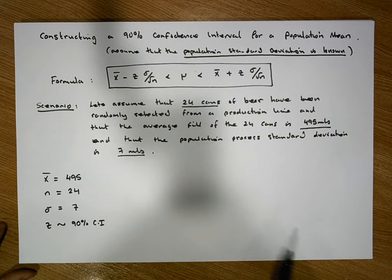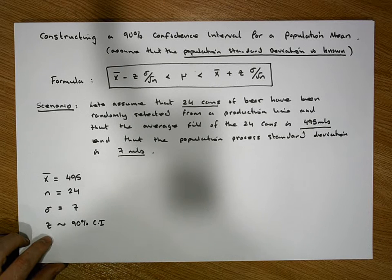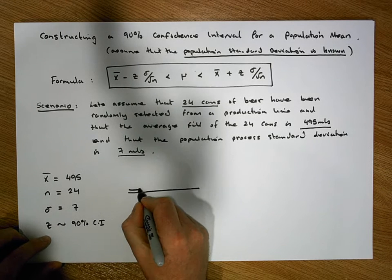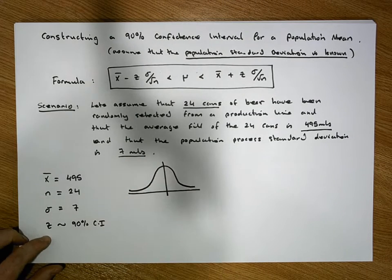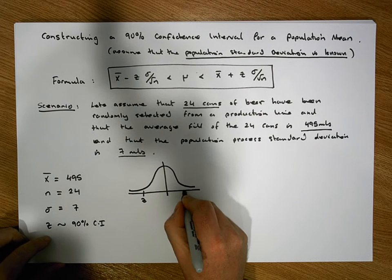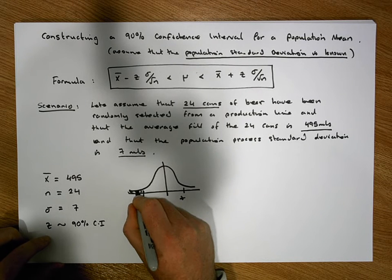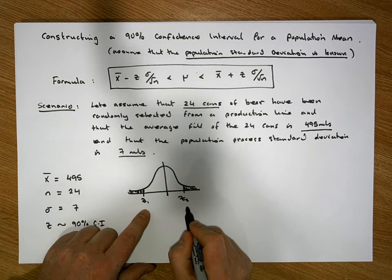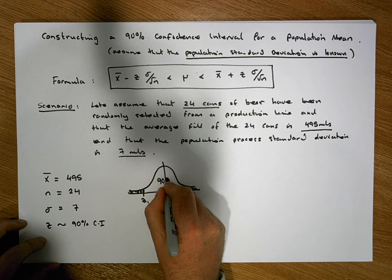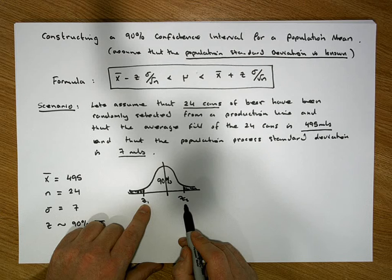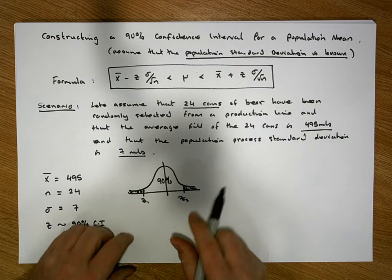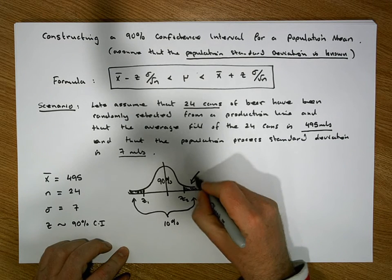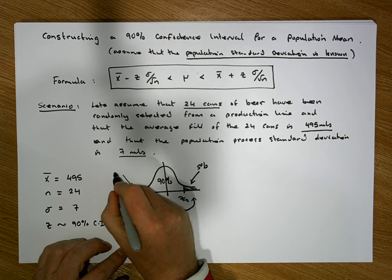So how do we calculate this z value? Let's draw a little graph. From a standard normal perspective, we'd like to identify a z value on the left and a z value on the right, so that the area between these z values — let's call them z1 and z2 — is 90% of the area under the curve. What does that mean about the tails? The two tails must accommodate 10% of the area in total, which means one tail accommodates 5% and the other tail accommodates 5%.